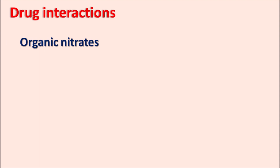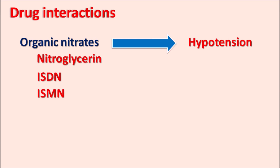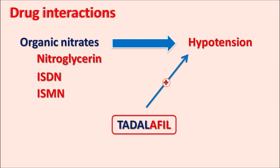An important drug interaction is observed with organic nitrates. Drugs like nitroglycerin, isosorbide dinitrate, isosorbide mononitrate — all these are organic nitrates used to control anginal pain. These drugs produce vasodilation resulting in hypotension, and Tadalafil can also produce vasodilation resulting in hypotension. So Tadalafil can increase the hypotension produced by organic nitrates, resulting in severe hypotension leading to syncope, coma, and even death. That is why organic nitrates should not be combined with Tadalafil.